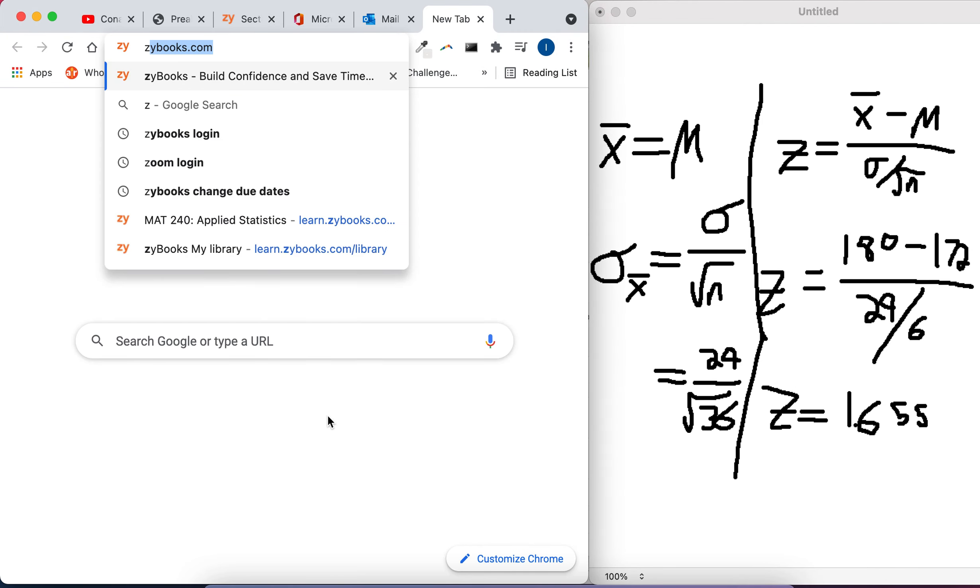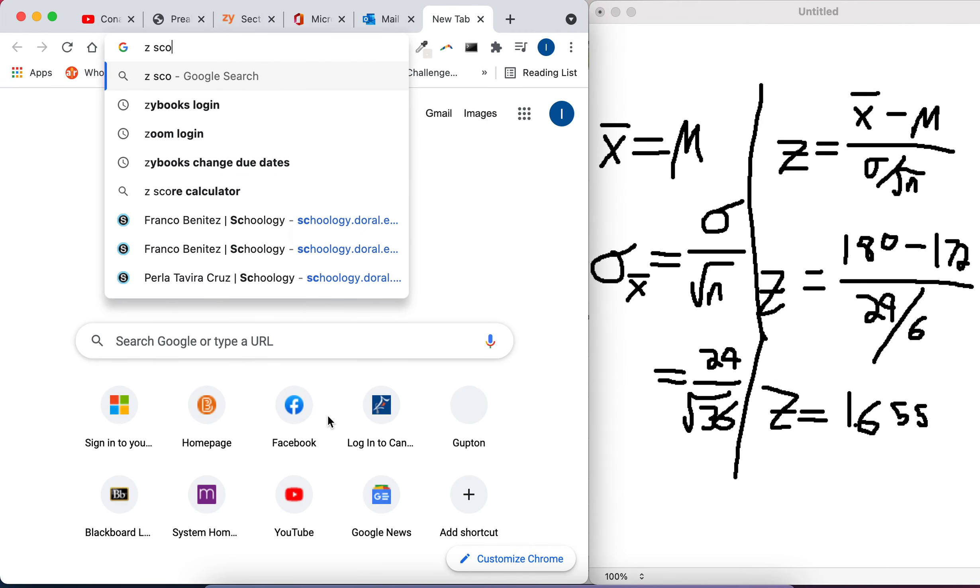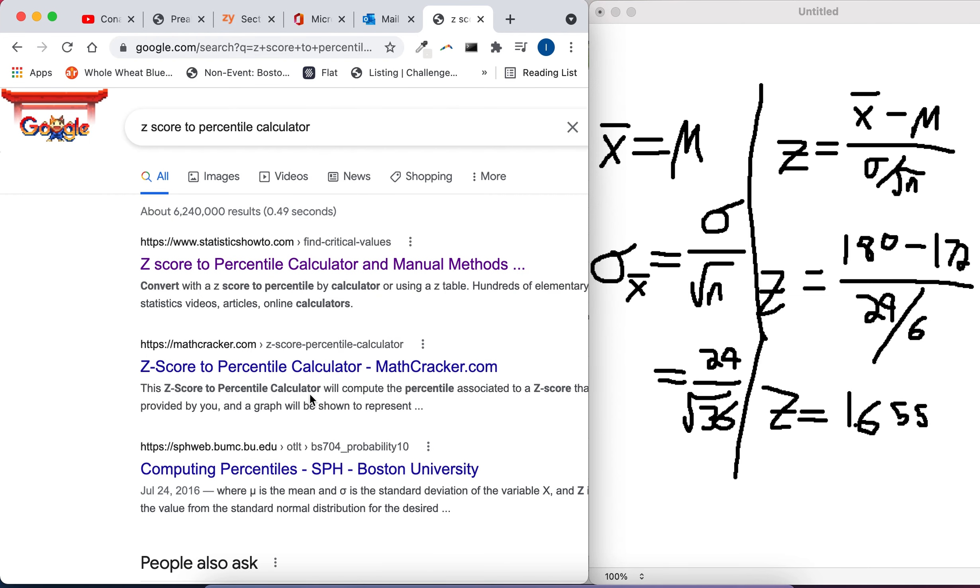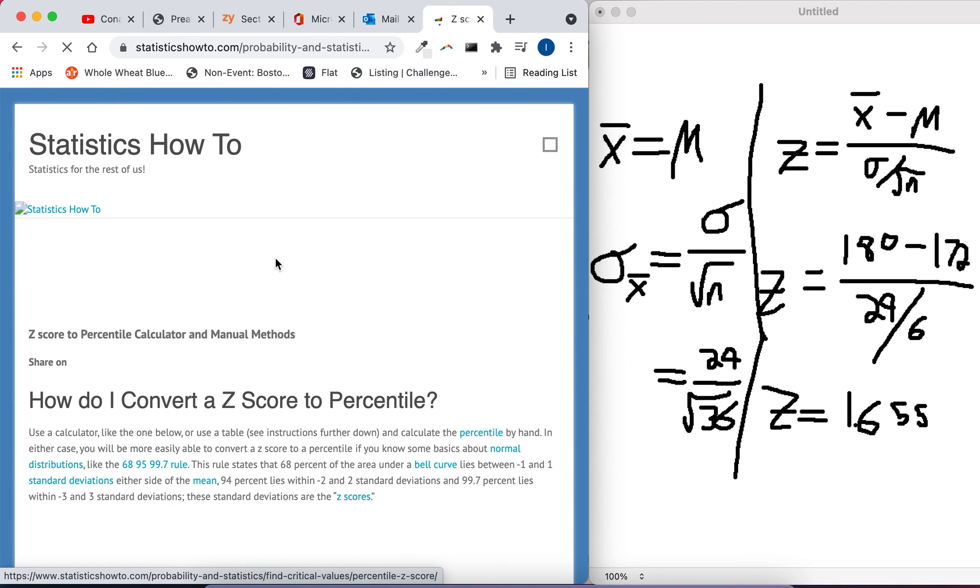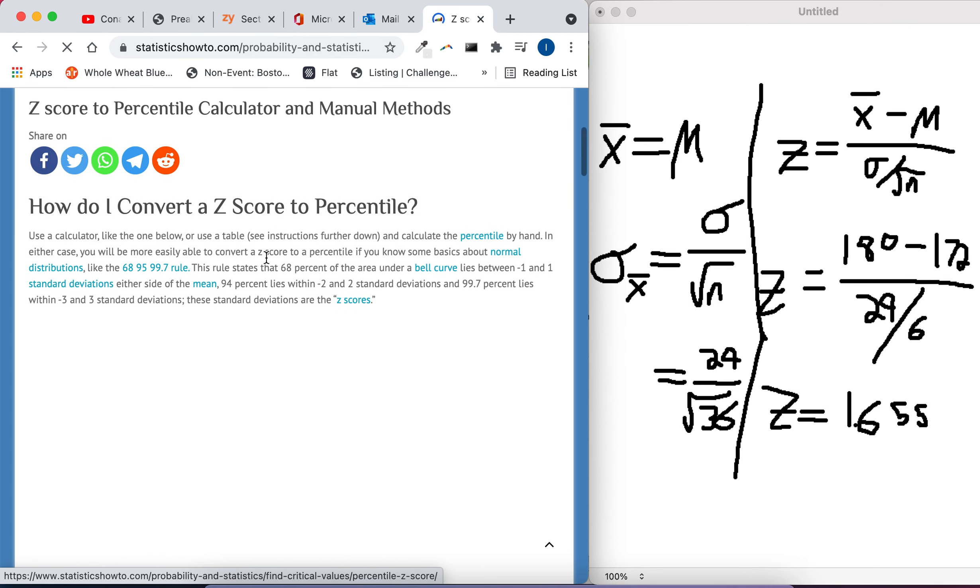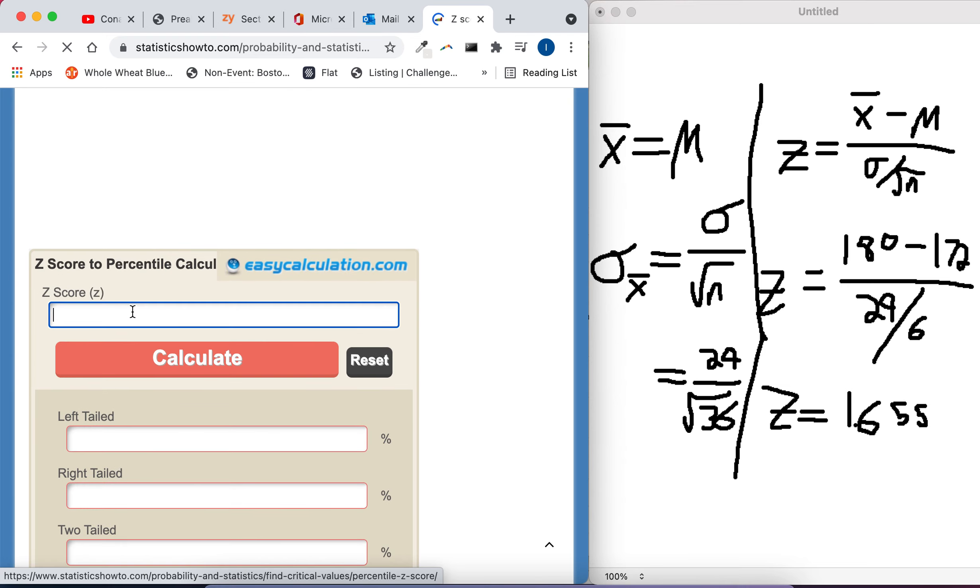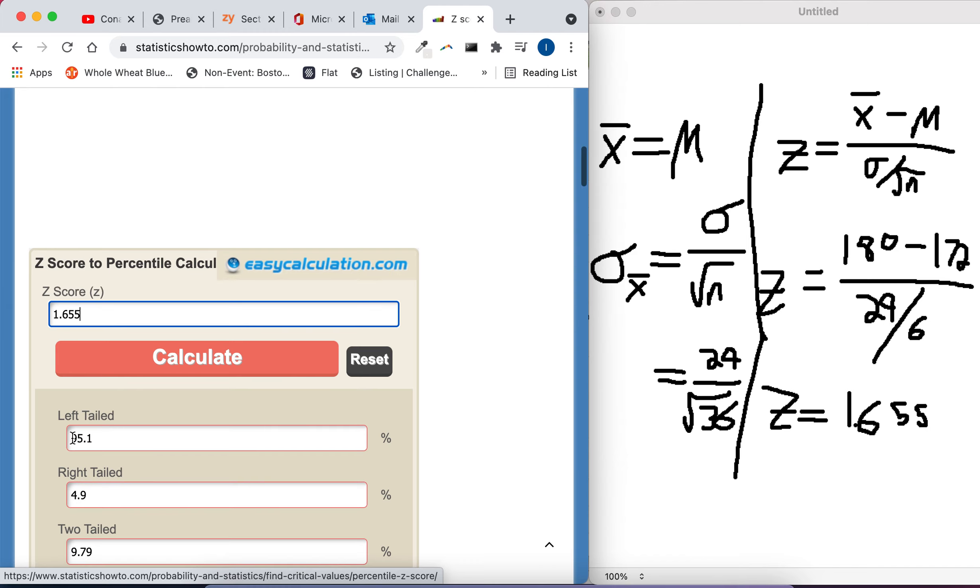We want to type in Google z-score to percentile calculator. This one isn't the one I usually use, but we can probably use it. Type our z-score in here, 1.655. And then it gives us left-tail and right-tail probabilities.